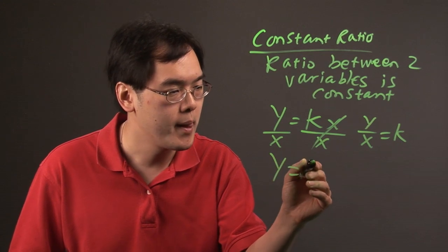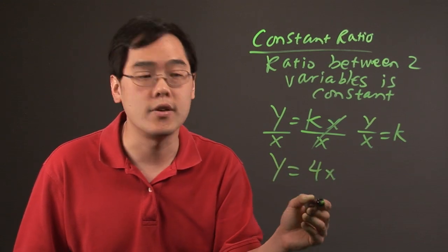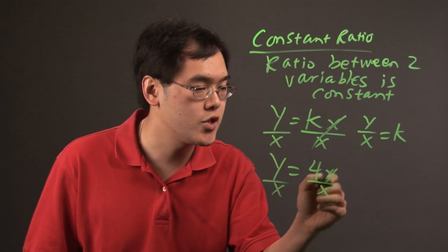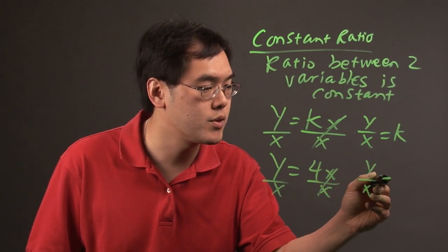if you have y equals 4x and divide both sides by x, you get y over x equals 4.